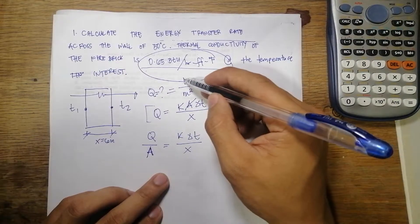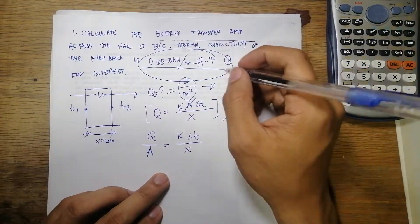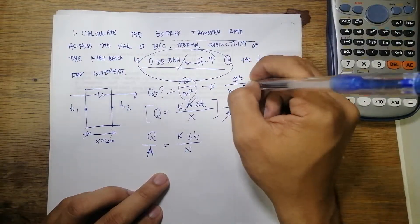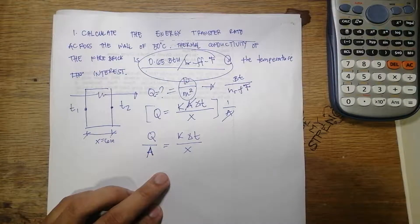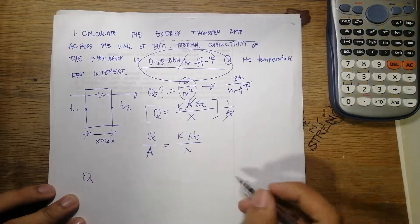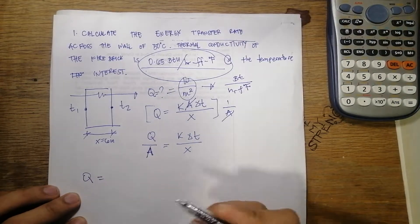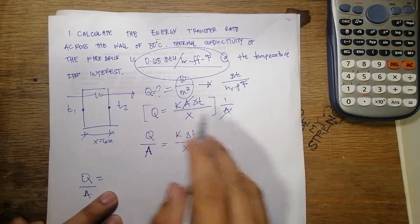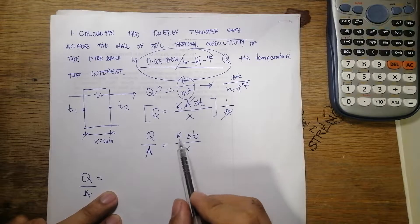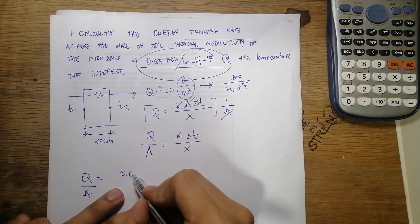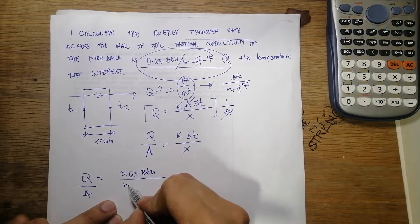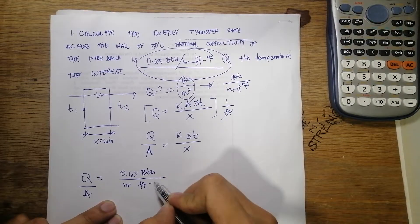The requirement is watts per meter squared, or we can use BTU per hour. So Q over A is equal to k times ΔT over x. The given thermal conductivity is 0.65 BTU per hour per foot per degree Fahrenheit.